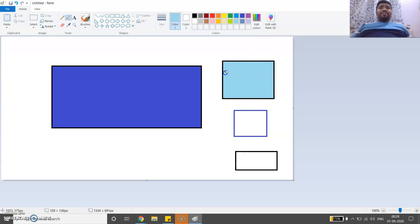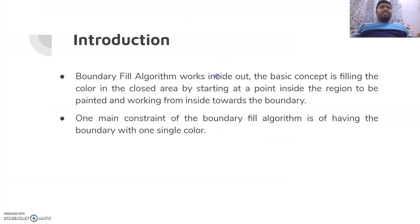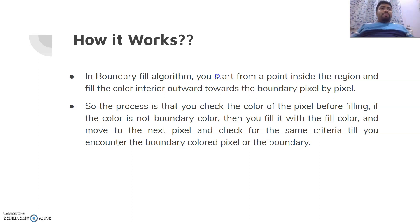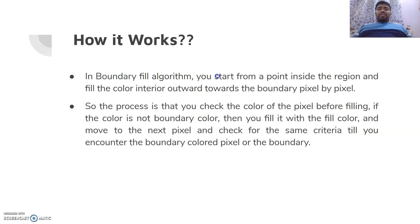Now suppose if I try filling some other color, you can see that the boundary is still one particular color — black. So in boundary fill algorithm we start from a point inside the region and fill the color interior outwards towards the boundary, and it works pixel by pixel. This process checks the pixel before filling the fill color.